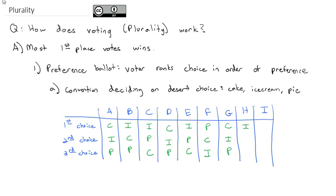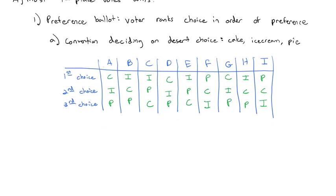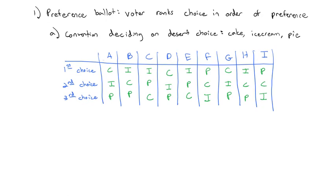H wants ice cream, then cake, then pie. And I wants pie, then cake, and then ice cream. So they've rank ordered their votes for each of the choices: first, second, and third preference. That is called a preference ballot.